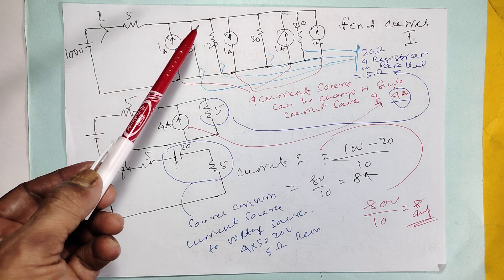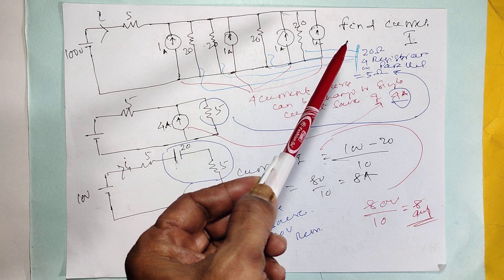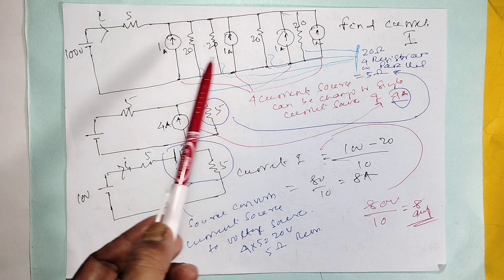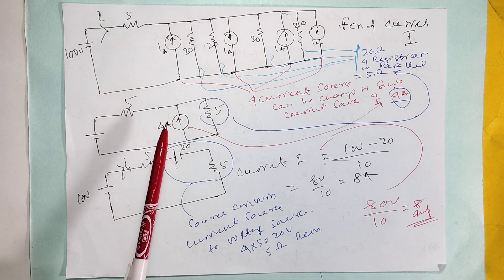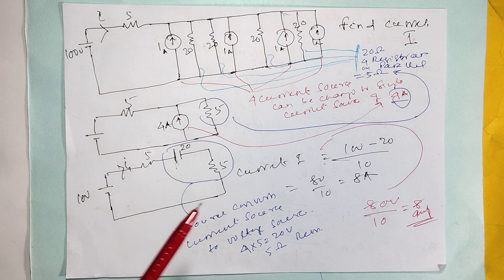Source conversion: 4 parallel current sources as independent sources are there. You change to 4 1-ampere each. So change to 4 20-ohm parallel, you know it very well. Then from current source to voltage source, then you can do it.